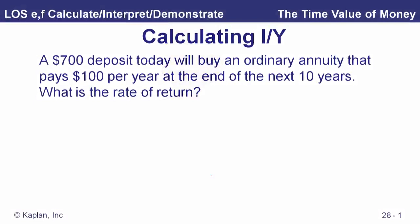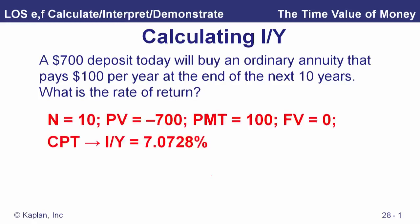Let's look at one more example. A $700 deposit today will buy an ordinary annuity that pays $100 per year at the end of the next 10 years. What is the rate of return? N is 10, we're in end mode, payments at the end of each year. Present value is negative $700 — that's what we pay today. Payments are positive $100, future value is zero. We compute the interest rate implicit in those numbers and find it is 7.0728%.